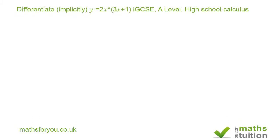Welcome to this short exercise on differentiation in which you differentiate y is equal to 2x raised to the power 3x plus 1. It says differentiate implicitly, because it would be very difficult to differentiate y equals 2x raised to the power 3x plus 1 directly. It can be done, but it is very difficult. So if we copy this down again, we have that y equals 2x raised to the power 3x plus 1.